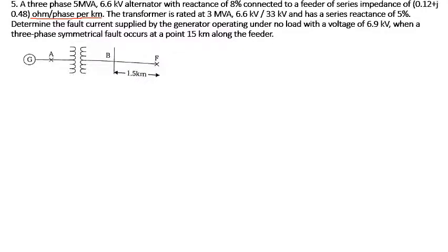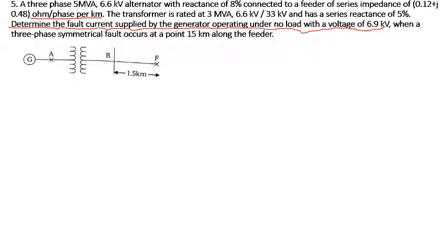We have to determine the fault current supplied by the generator operating under no load with a voltage of 6.9 kV. You need to be very careful because it is working at 6.6 kV but there is a changed voltage of 6.9 kV. There is a three-phase fault which is going to occur at 15 kilometers along the feeder.